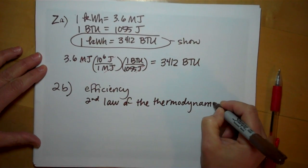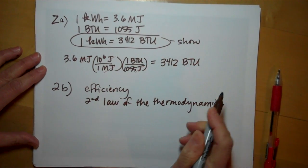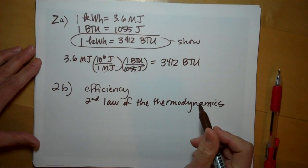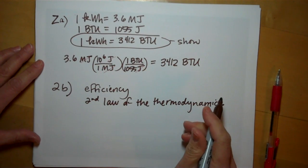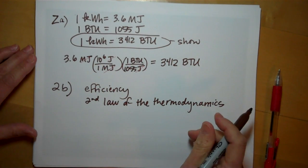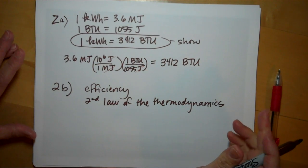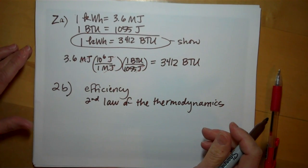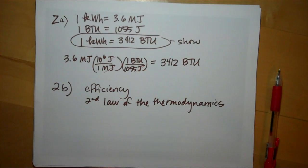In fact, a power plant is only going to be maybe 30, 40% efficient at best. 60% to 70%, or even 70 to 80% of the burned coal is going to be lost as waste heat. That's number two.